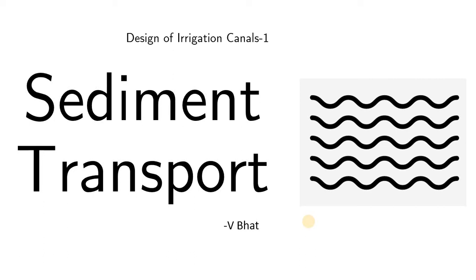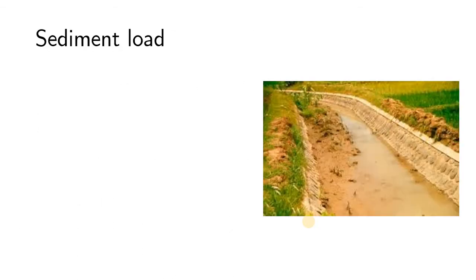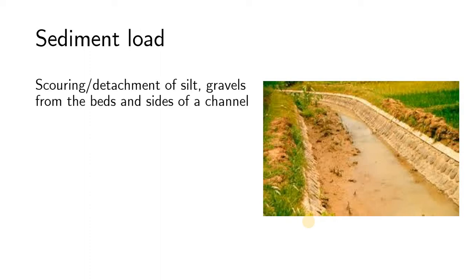Hello folks, hope all of you are doing good. This is the first part in a series on design of irrigation canals. In this segment, sediment transport, being a very basic prerequisite for the design of irrigation canals, is dealt with in detail. Whenever water flows in a channel, whether natural or artificial, it tries to scour its surface. Silt, gravel, or even larger boulders are detached from the bed or sides of the channel, and these detached particles are swept downstream by the moving water. This phenomenon is referred to as sediment transport.